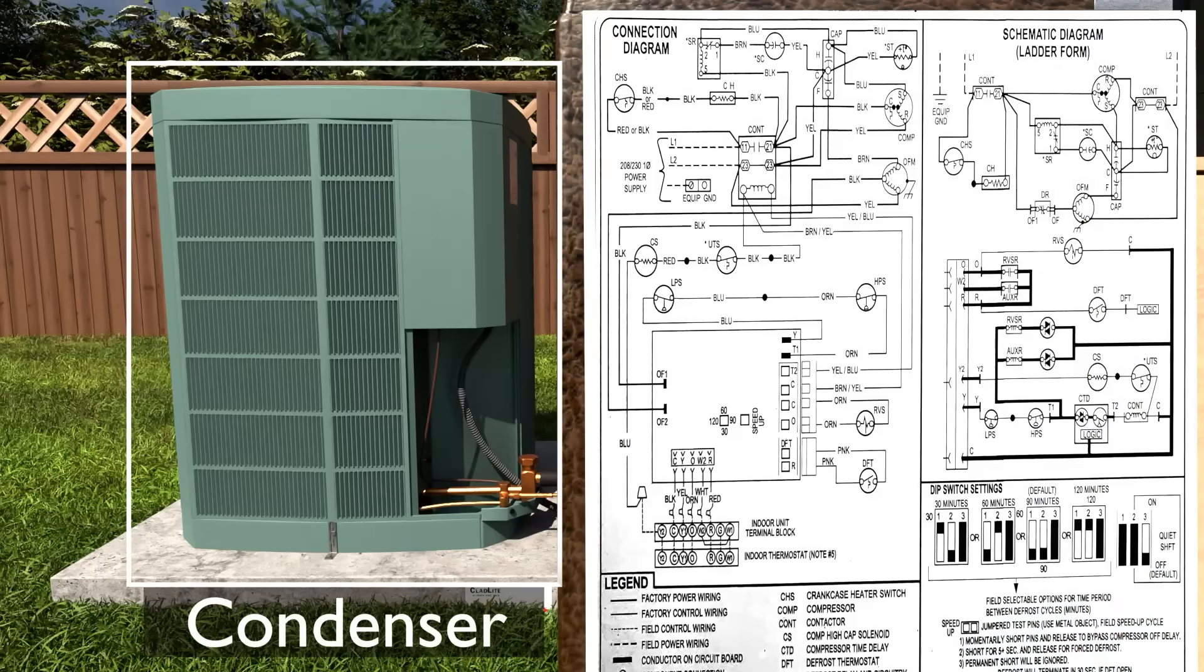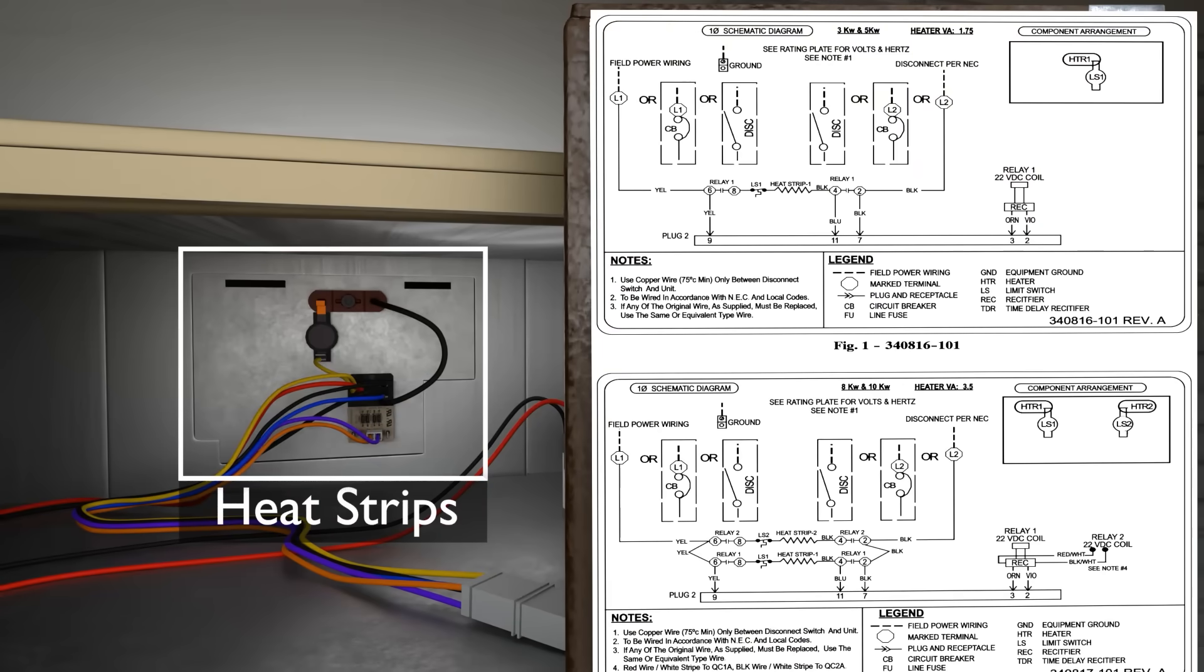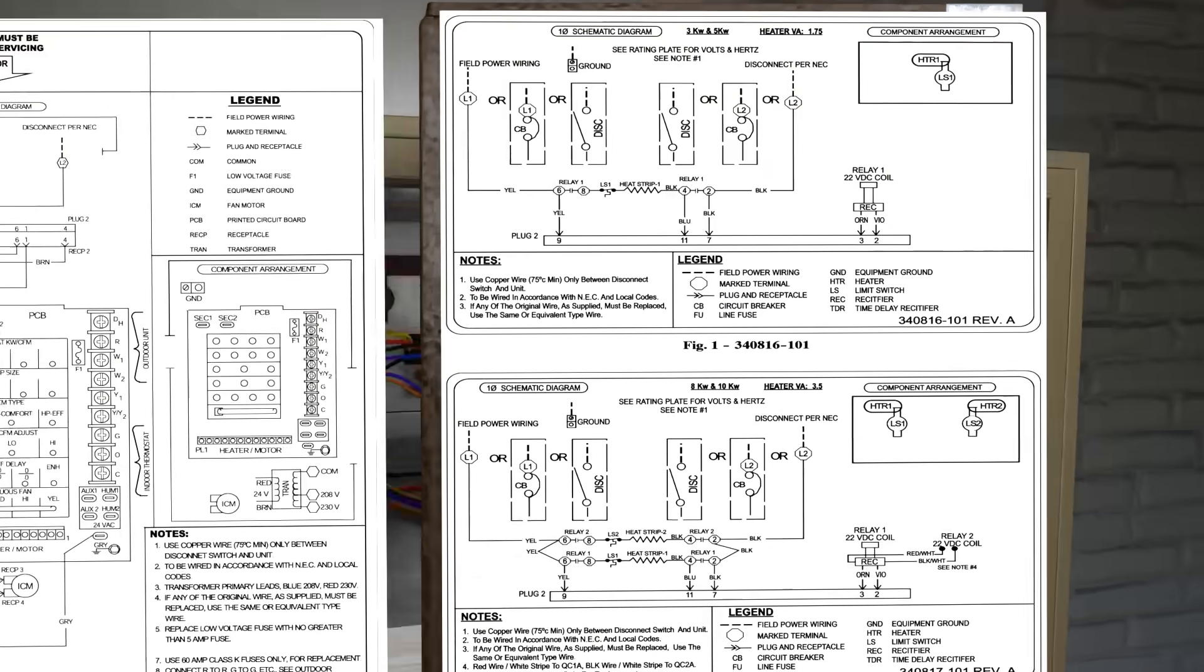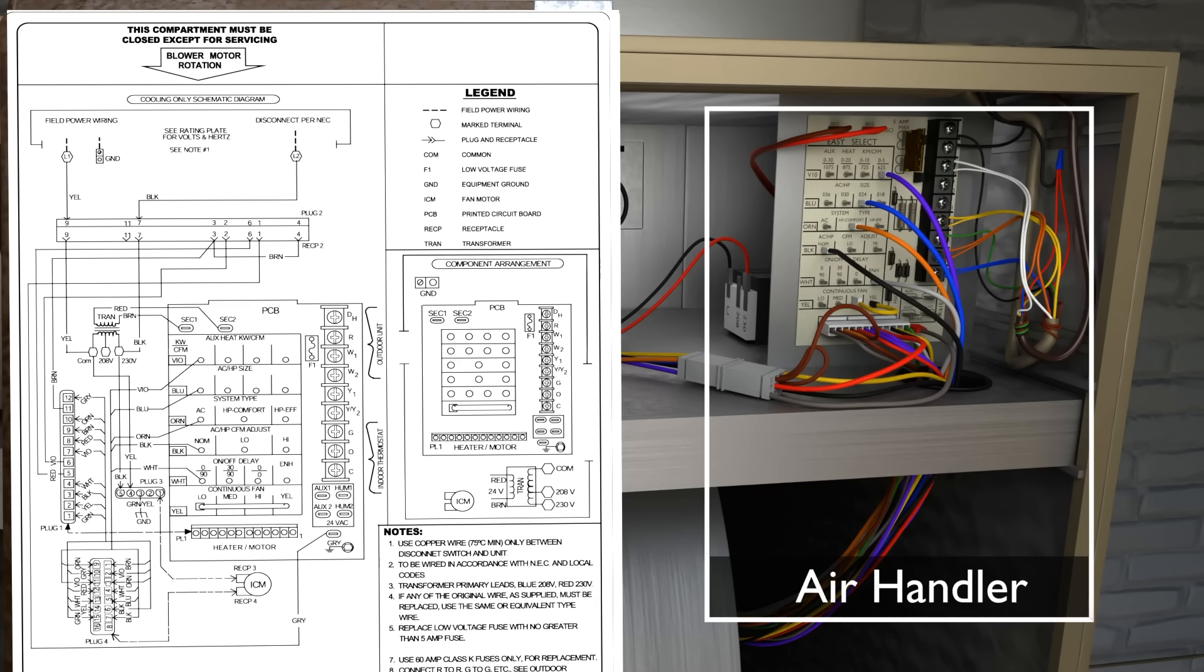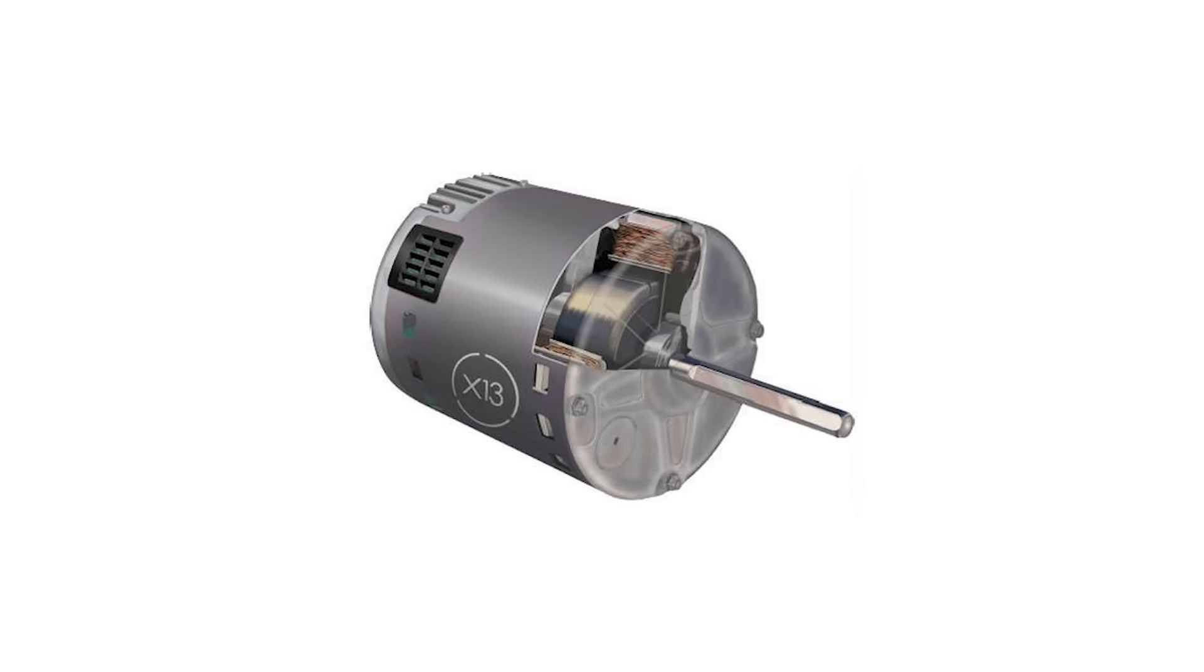First, we have a condenser and our condenser diagram. We have heat strips or electric heat with our heat strip diagram, and we have our air handler with our air handler diagram. You may note that this is an ECM configuration, meaning it has a variable speed blower motor.